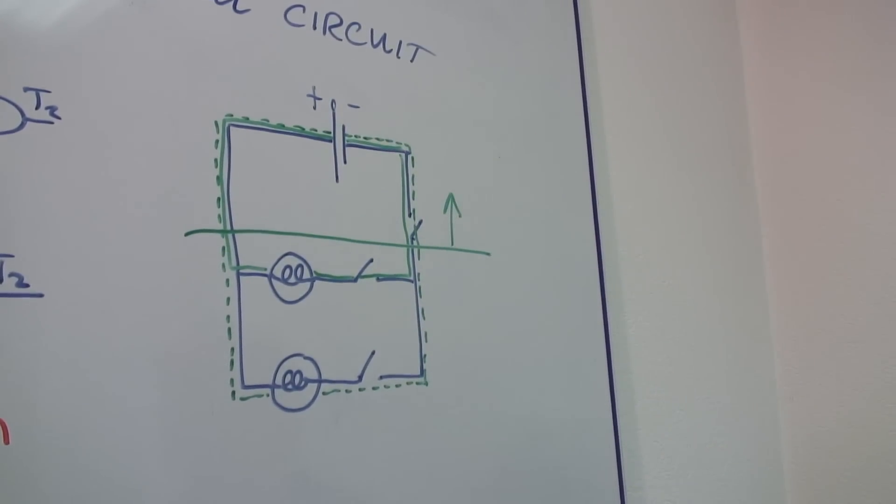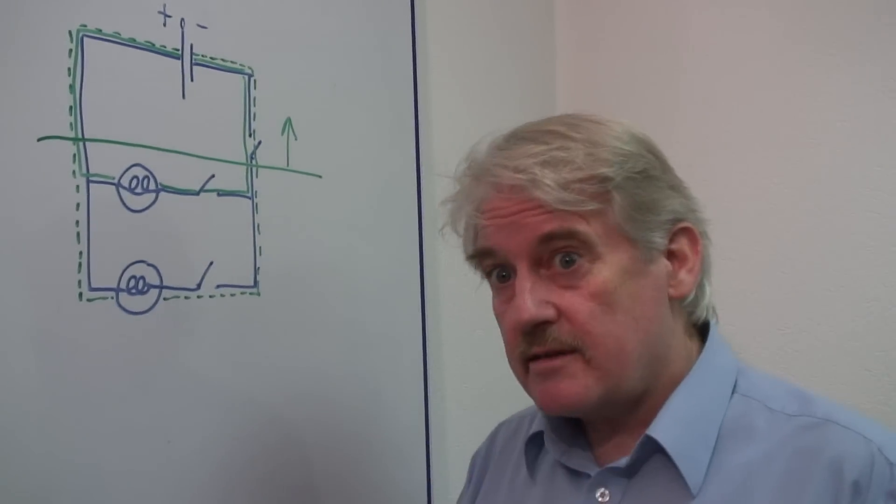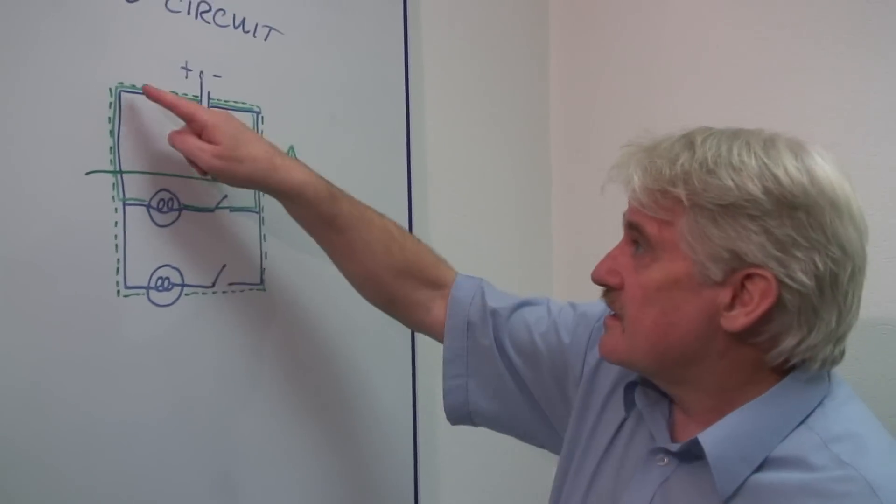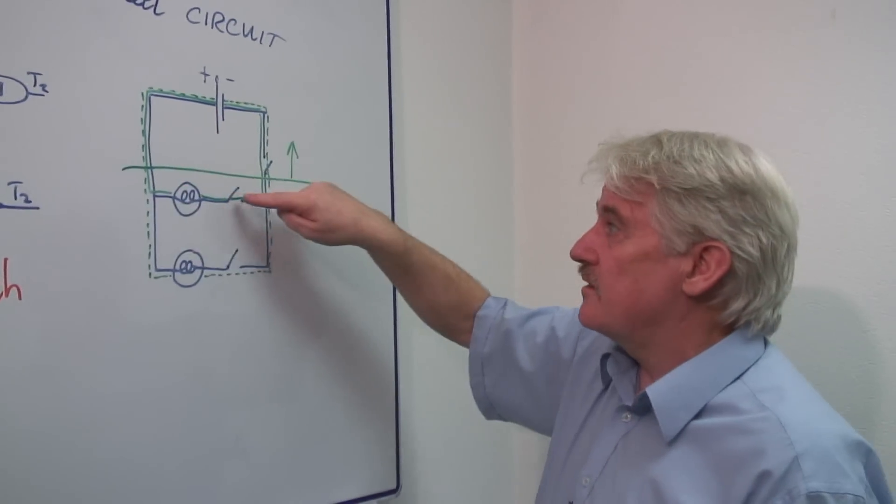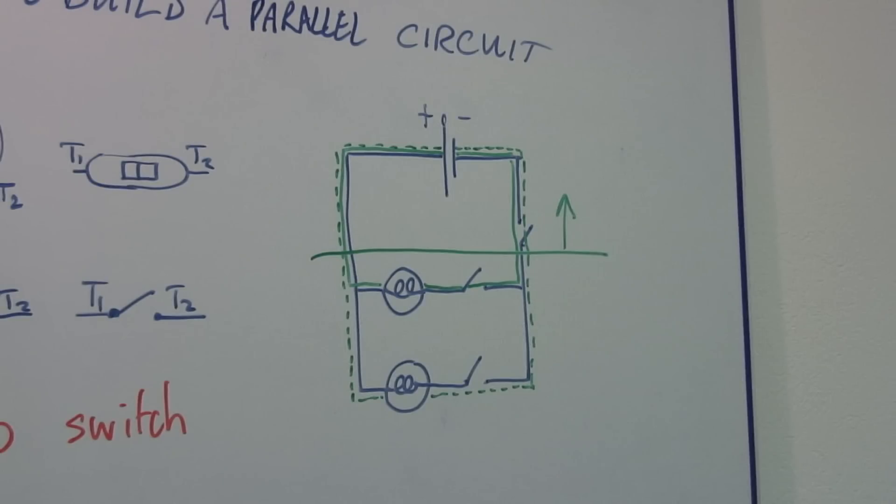And that is what the difference is between a parallel circuit and a series circuit. But you can see that each of these is a series circuit. The components have to be in series in a circuit.